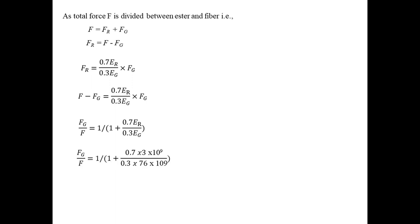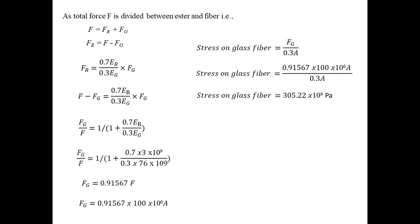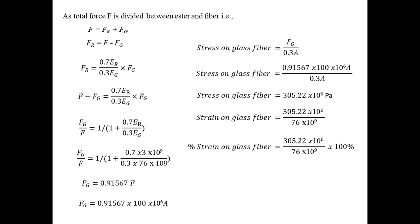Replacing the resin force with total force minus fiber force, and substituting the known moduli of fiber and resin, we solve for the fraction of force taken by the fiber. Since total force equals stress multiplied by total area, we get force on the fiber in terms of total surface area. The stress on the fiber is then force on fiber divided by fiber area, and after simplification the fiber strain — stress divided by fiber modulus — gives a value of 0.4%.